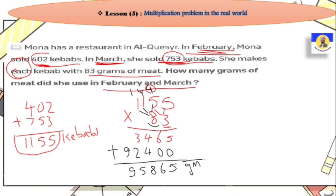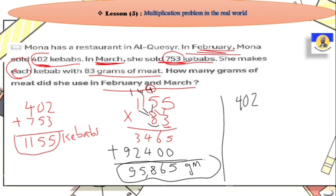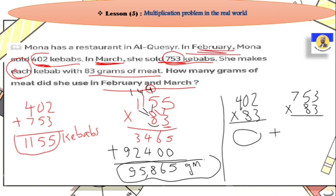So the total grams of meat is 95,865. There is also another method: you can multiply 402 by 83 separately, then multiply 753 by 83 separately, and add the two answers together — you'll get the same result. So you can either add first then multiply, or multiply each separately then add at the end.